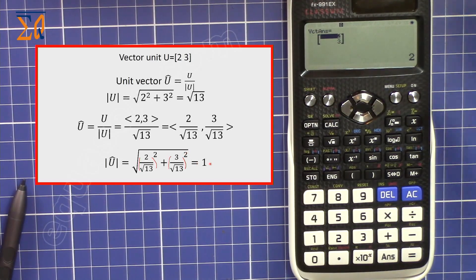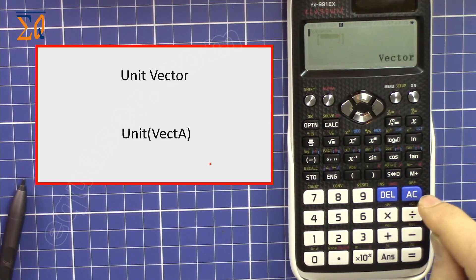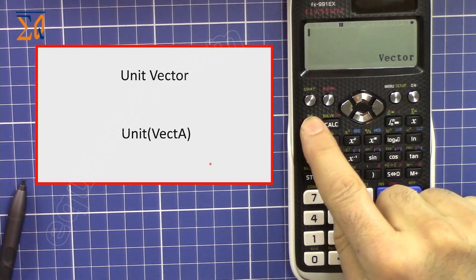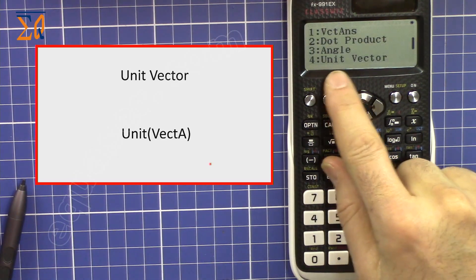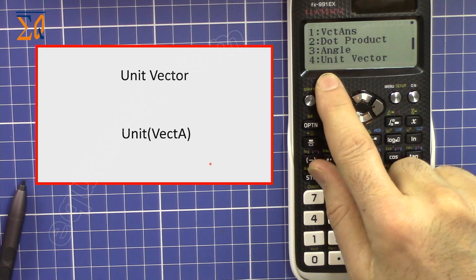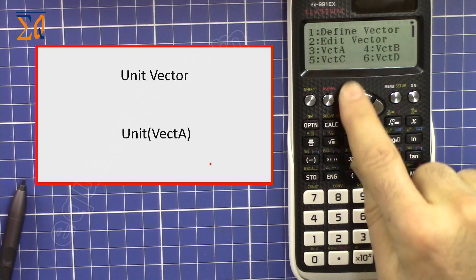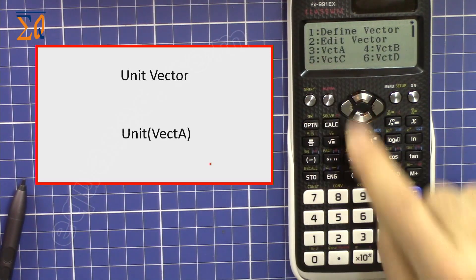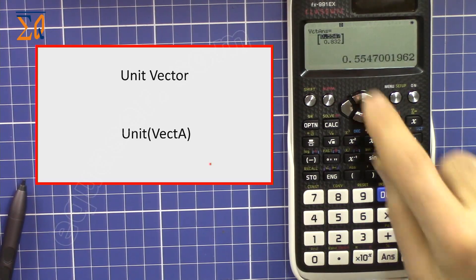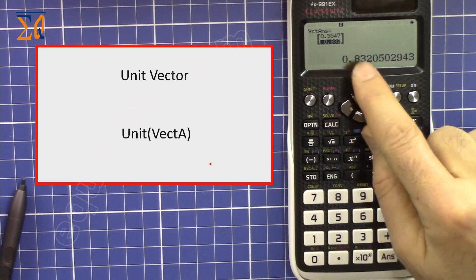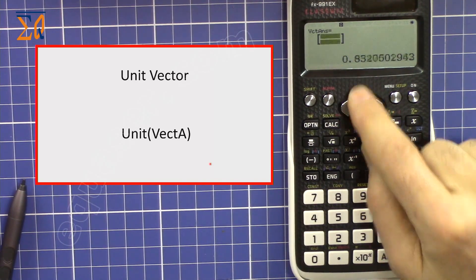This can also be done with the calculator. Go to Option, then the Unit Vector function, which is number 4. Then bring the vector: Option, number 3 for vector A. We got 0.5547 and then the second value.